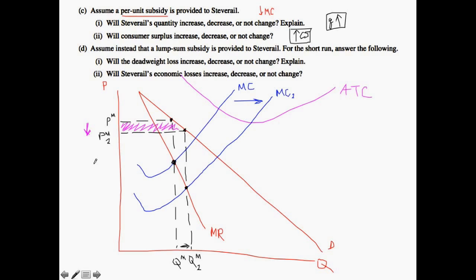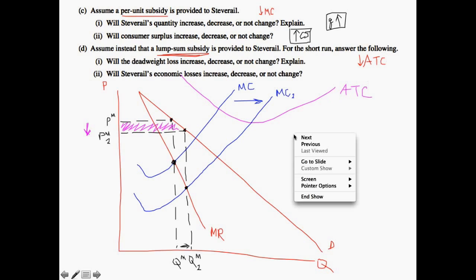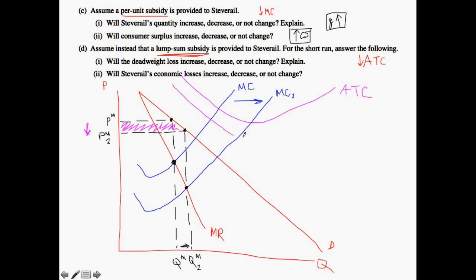Now let's think about a lump sum subsidy. A lump sum subsidy means the average total cost is the one affected. A lump sum is essentially a one-time payment — a subsidy provided just once for the firm. The way to think about this drop in average total cost is that there is some outside funding, whether from the government or another source, that influences Steve Rail's average total cost but does not influence Steve Rail's marginal cost. That distinction is really important: the per-unit subsidy affected marginal cost, but a one-time lump sum subsidy affects average total cost and not marginal cost.